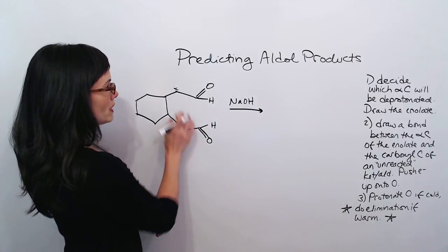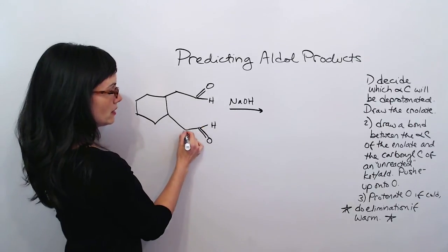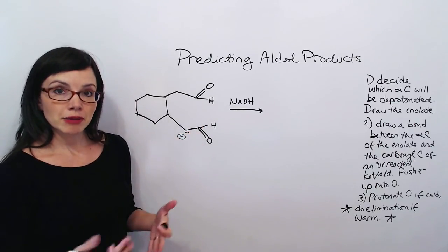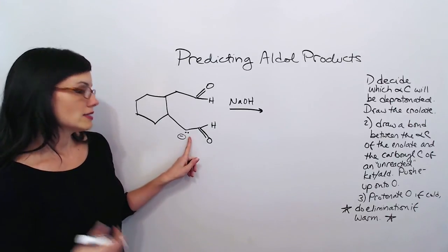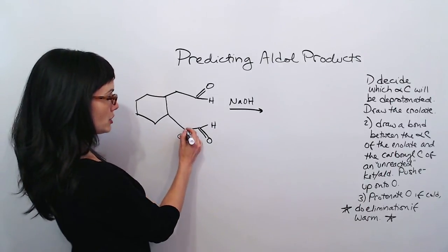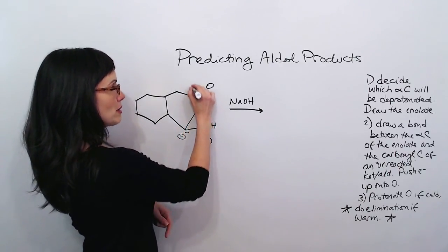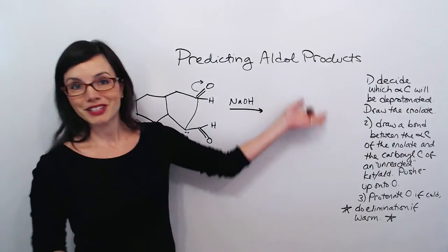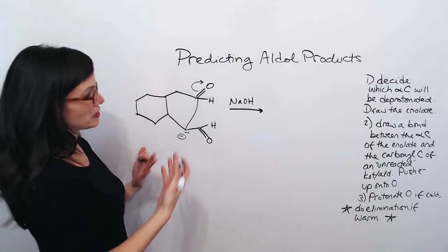And I'm going to draw it as the enolate. I'm going to give it an electron pair and a negative charge. And I'm going to draw a bond between this alpha carbon and the other carbonyl. And that's going to look just like this. And then I'm going to push these electrons up onto the O. So again, I follow these exact same rules. It just looks a little different.